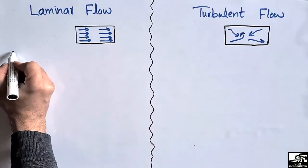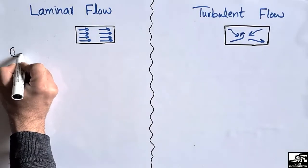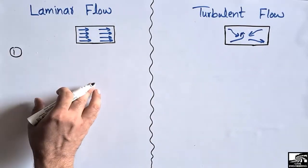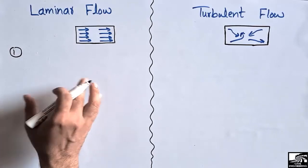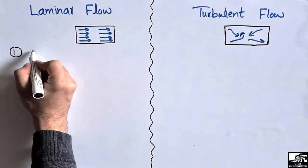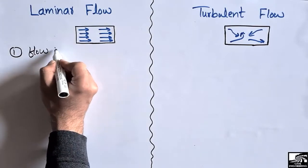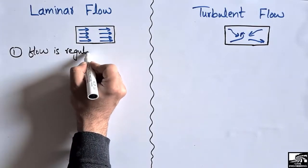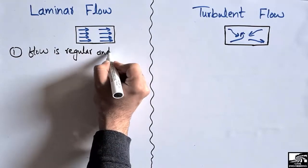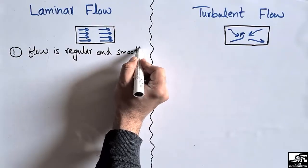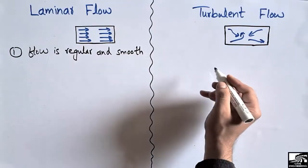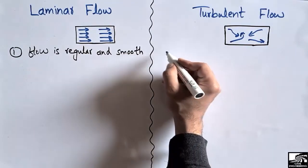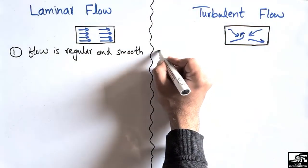There are also some other characteristics of these types of flow. The first characteristic is that laminar flow is regular and smooth, while turbulent flow is an irregular flow.